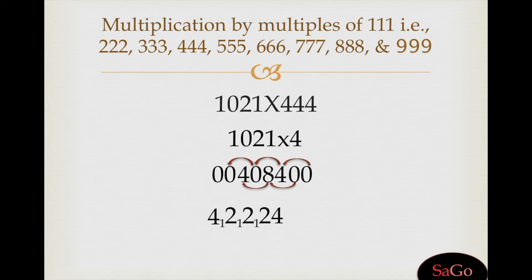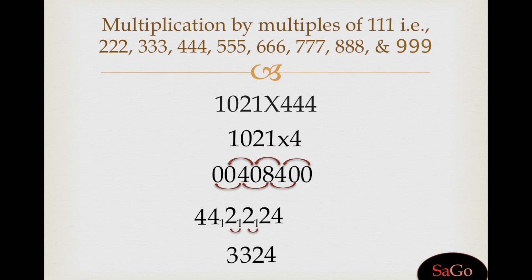0, 4, and 0 makes 4, write 4. 4, 0, and 0 gives 4, write 4. Now adjust the carries: write the last digit 4 as it is, 2 as it is. 1 plus 2 makes 3, write 3. 1 plus 2 makes 3, write 3. 1 plus 4 makes 5, write 5. And 4 as it is. Our answer is 453,324.